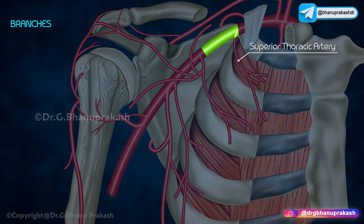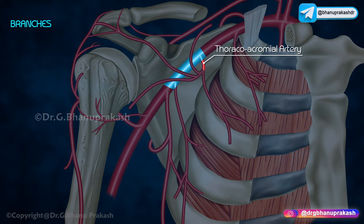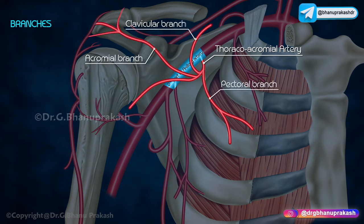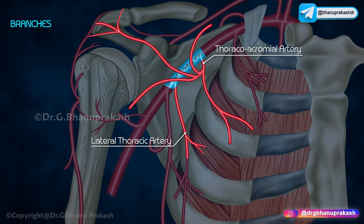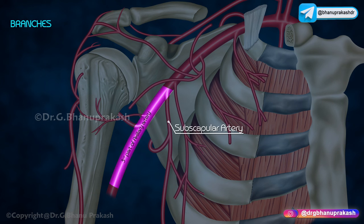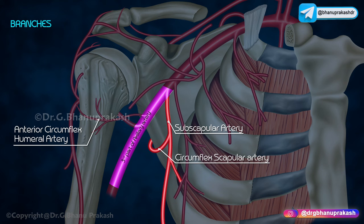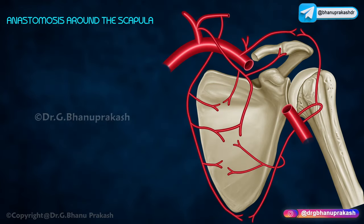Branches of the axillary artery: the superior thoracic artery arises from the first part. The thoracoacromial artery arises from the second part and gives off four branches: pectoral, acromial, clavicular, and deltoid. The lateral thoracic artery also arises from the second part and gives off several mammary branches. The subscapular artery arises from the third part and gives rise to the circumflex scapular artery. The anterior and posterior circumflex humeral arteries also arise from the third part.